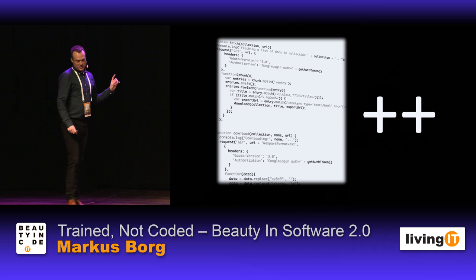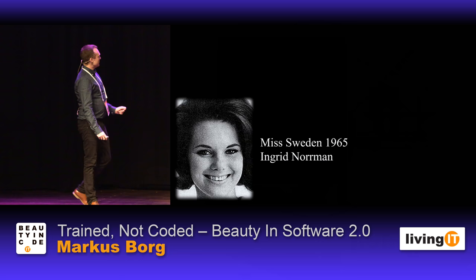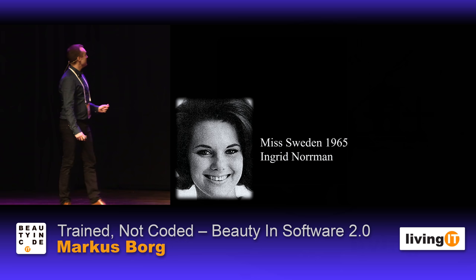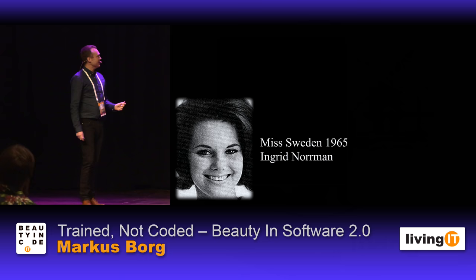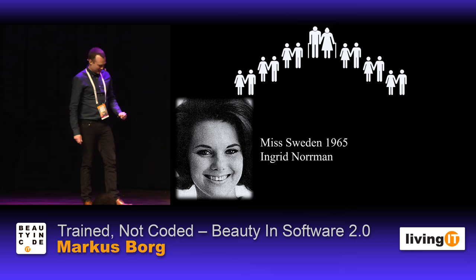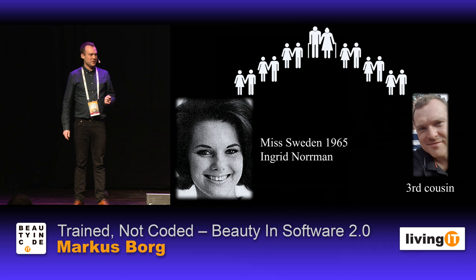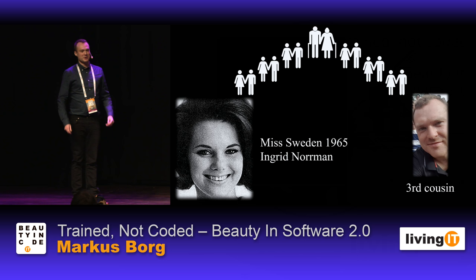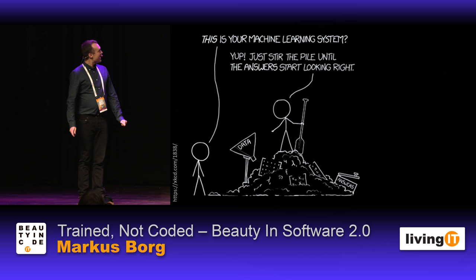I'm going to talk about software 2.0, whatever that is, and also about beauty. I'm happy to introduce you to Miss Sweden 1965, Ingrid Norman. Ingrid and I actually happen to share great-great grandparents, which makes us third cousins — 'bryllingar' for the Swedes in the audience. I never expected my work in genealogy to give me a good introduction for a technical talk, but here we are.